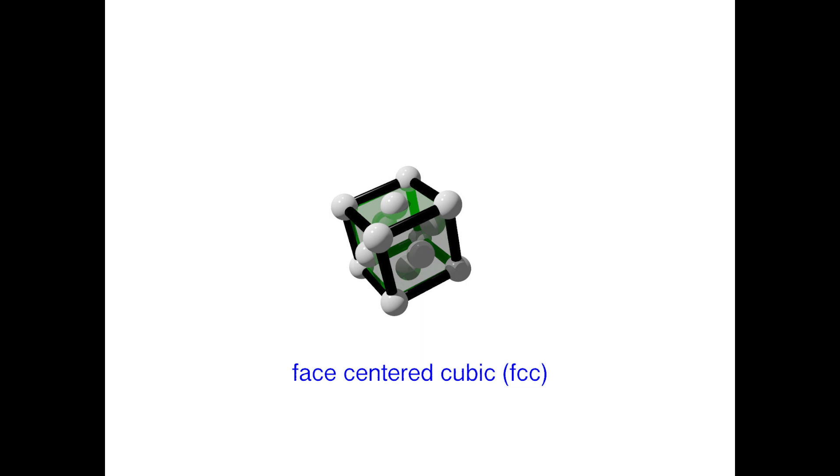This is a point you are expected to know. CCP and FCC are identical structures. The reason for the two terms really has to do with context. Cubic close packing is easier to remember if you're talking about layers of structures, whereas face-centered cubic is easier to invoke when you're talking about an individual unit cell. For the purpose of this course, you can use these two terms interchangeably.